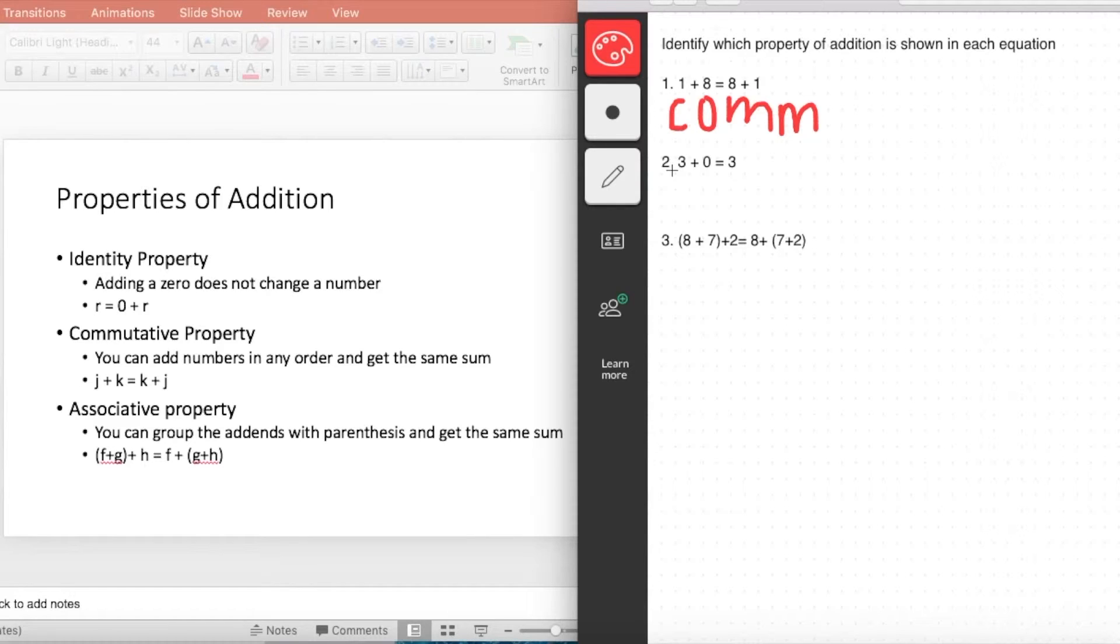Now let's look at the second example. 3 + 0 = 3. Adding a zero does not change a number. Therefore, this is identity property.